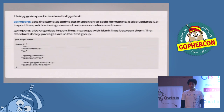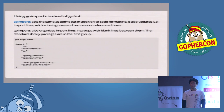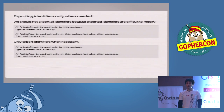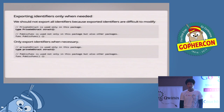Next, I'd like to talk about how to make our packages extensible. In Go, we can export an identifier like a type and function by capitalizing its first letter. However, we shouldn't export all identifiers because exported identifiers are difficult to modify. The modification to an exported identifier will affect all of the other packages and programs which use it. So we should export only identifiers when necessary. In the example code, the private struct type is exported, but it shouldn't be because it's supposed to be used only in the same package. So we should make its first letter lowercase like in the lower example.